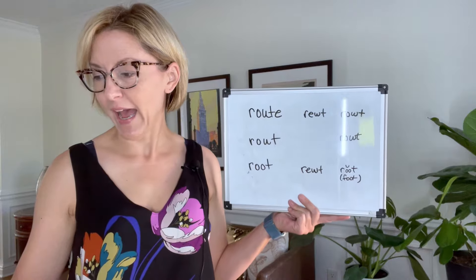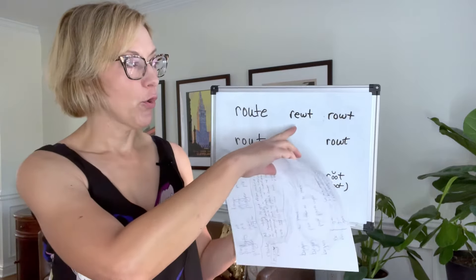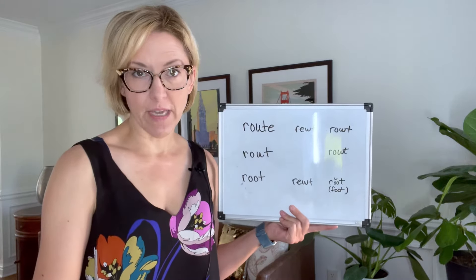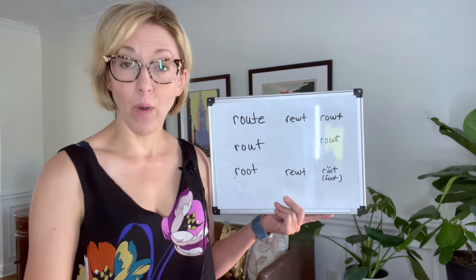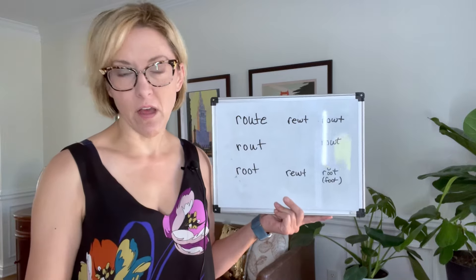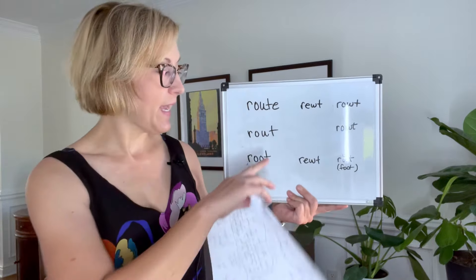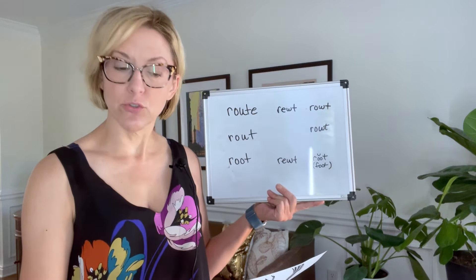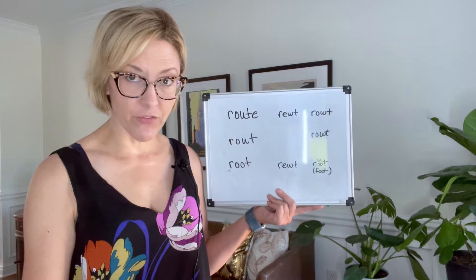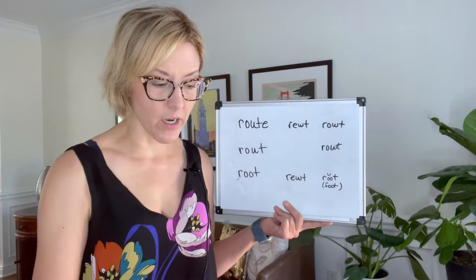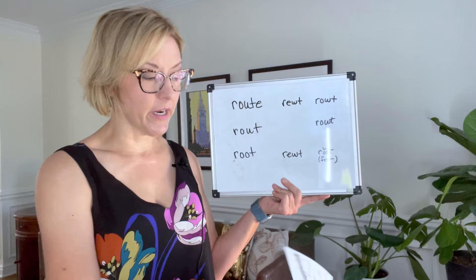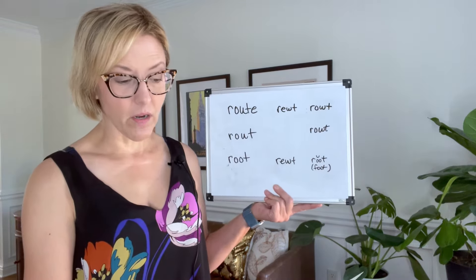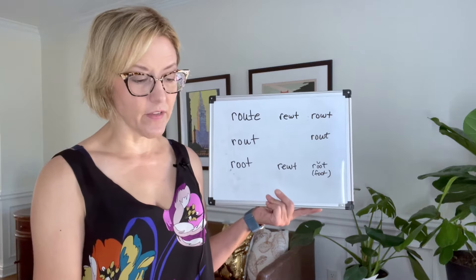Let's break this down. We have 'root' or 'route,' which is a way to get from point A to point B or to send along a certain course. We have 'rout,' R-O-U-T, which means to retreat or to be in a state of confusion — that is not a very common word. And then we have 'root,' which is an underground part of a plant or the cause of something.